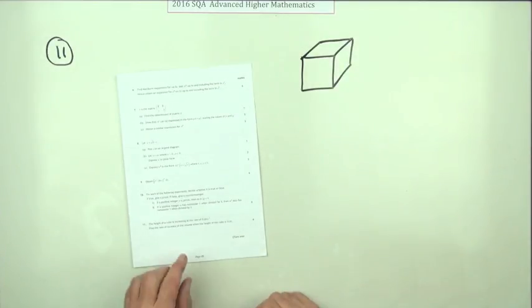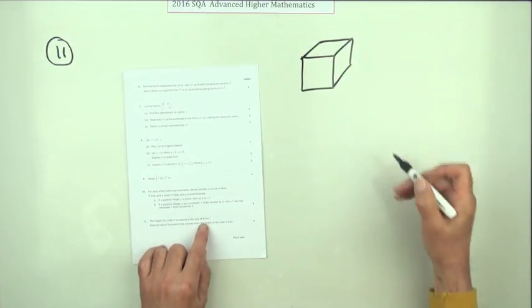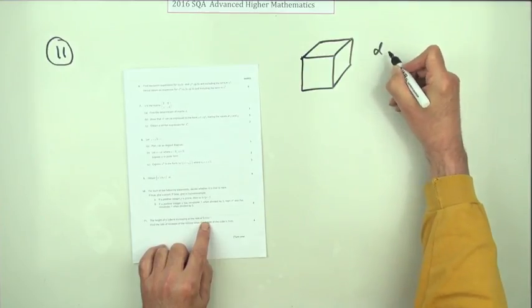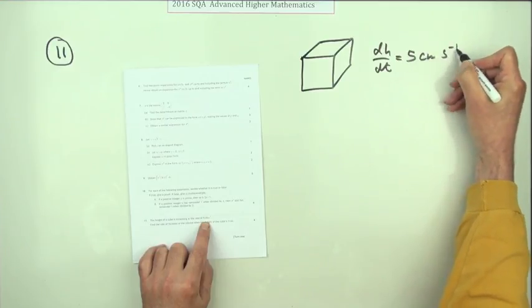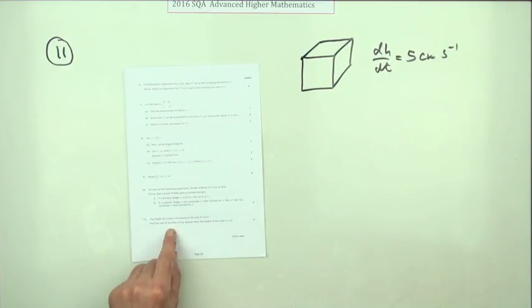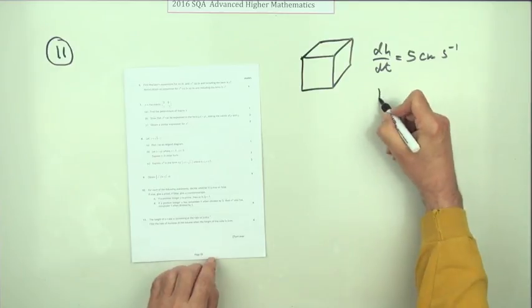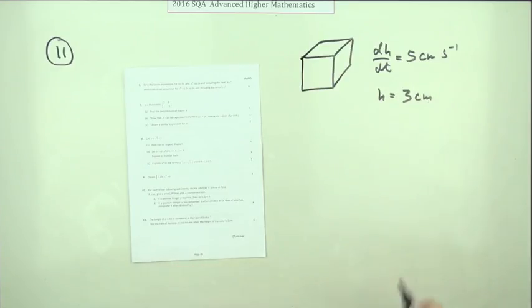The height of a cube is increasing at the rate of - call that dh/dt - five centimeters per second. Find the rate of increase of the volume when the height reaches three centimeters.